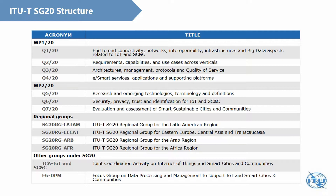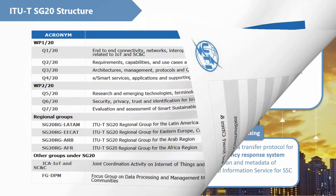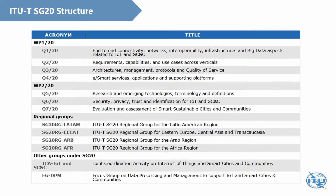In working party 2, Question 5 is the leading question to study terminologies and definitions. Question 6 addresses studies about security, privacy, trust, and identification for IoT and smart cities. Question 7 is focusing on evaluation and assessment of smart cities and communities. Besides that, we also have four regional groups and other groups under Study Group 20, including the JCA IoT and the focus group on data processing and management.